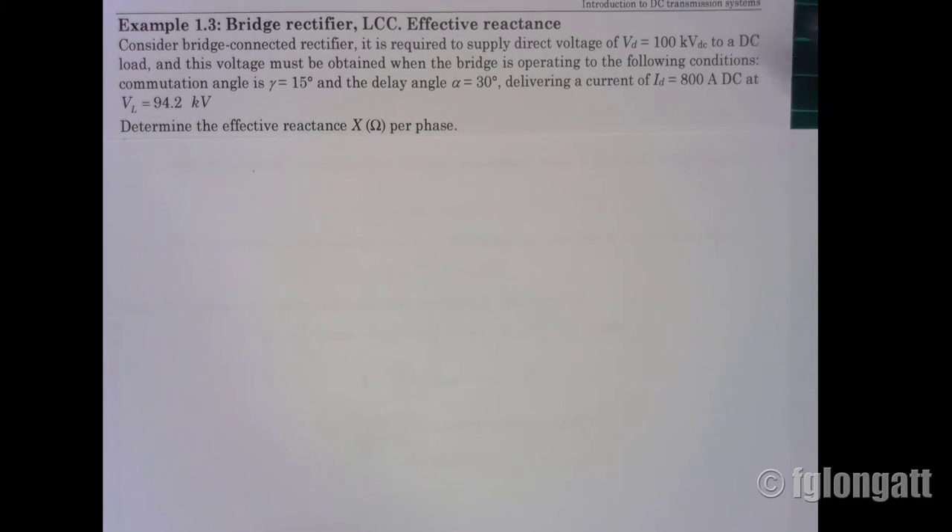This specific load requires a direct current of 800 amps. When this device is requesting 800 amps on the DC side, the supply voltage is 94.2 kV.